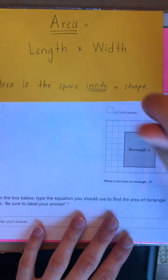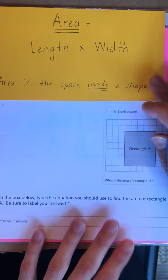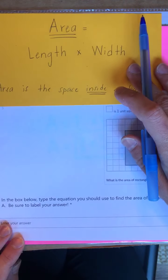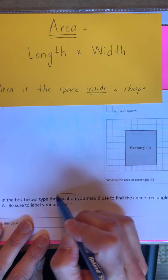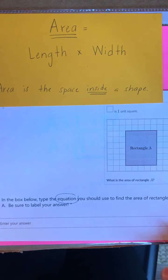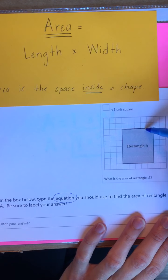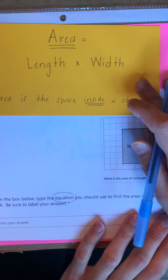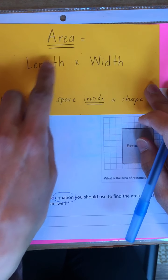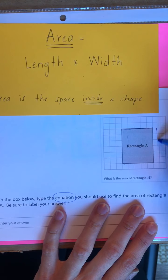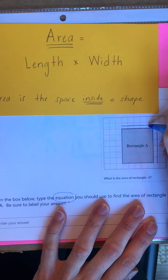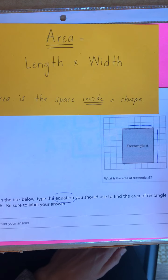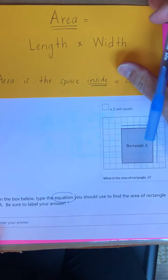Great job working on number 4. Let's take a look at number 5. It's very similar to all the ones we've been doing. It says: type the equation you should use to find the area of rectangle A. You're looking to find the area of this shaded-in rectangle. Remember, use your formula — area equals length times width. Count up your length, count up your width, multiply those numbers, and don't forget your label. When you're ready, press play and we'll take a look at number 6.